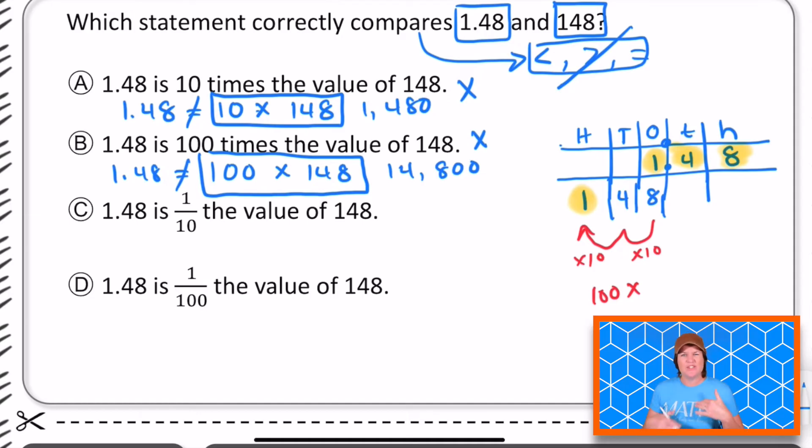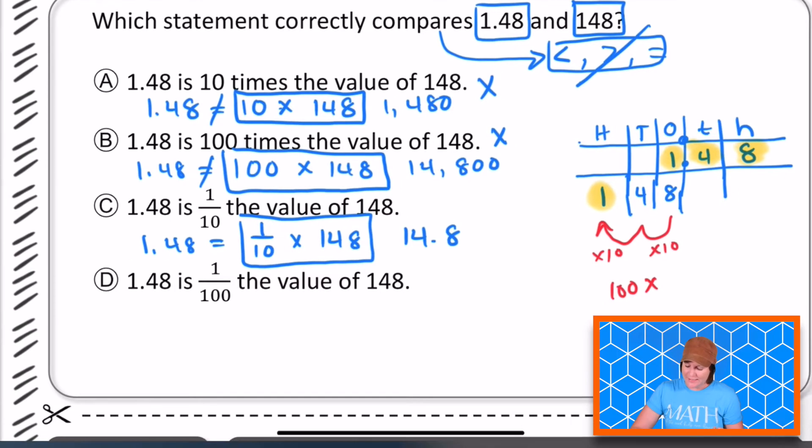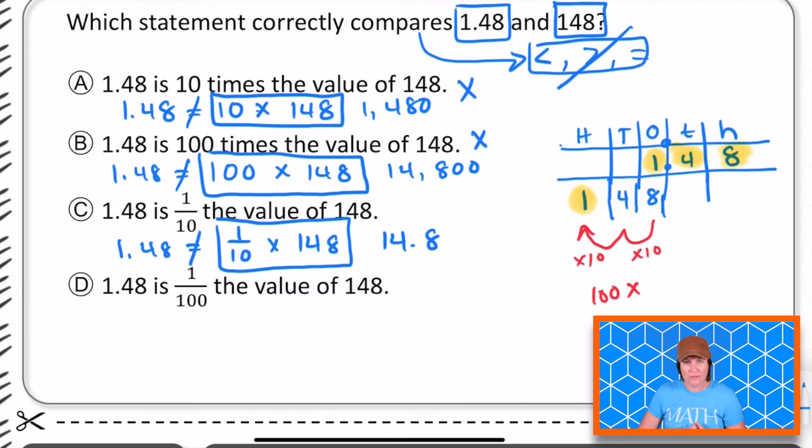Remember, if you need to go back and rewind so you can see what I'm doing again to understand it, you have that option as well. For choice C, it says that 1.48 is 1/10 of 148. I know that when I multiply a fraction by a whole number, it's going to make that whole number less. Now we're making it less and that's good, but we would only be making it 10 times less or 1/10 of would be 14.8. That's not equal to 1.48.